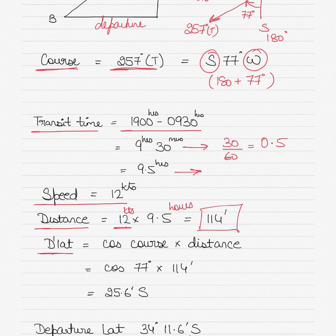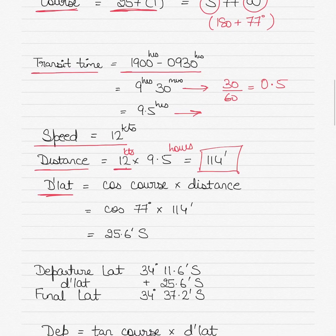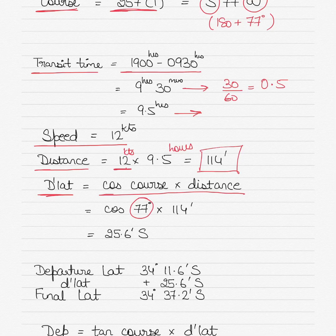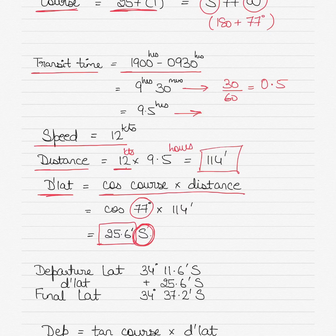The first thing to calculate is the D-lat. The formula is: D-lat equals cos(course) multiplied by distance. Even if you use 257 degrees instead of 77, you get the same answer — you can ignore any negative sign. So cos(77°) multiplied by 114 gives 25.6.